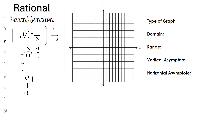Negative 0.1 — now plug in negative 1. What do you get? Negative 1. What is 1 over negative 0.1? Type that into the calculator. Negative 10 — thank you Ethan. We're not going to plug in 0 because you cannot divide by 0, so this is not possible. That's why there is going to be an asymptote there.